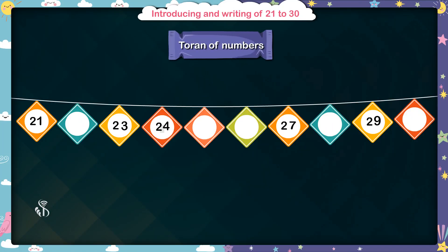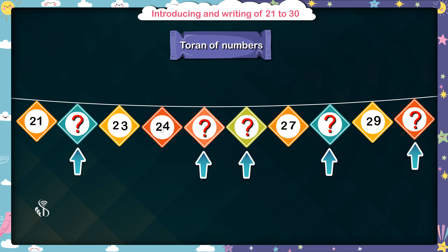Children, look here. This is a tooran of numbers. It is made up of 21 to 30 numbers. But some of the numbers are missing. You have to tell me the missing numbers. 22, 25, 26, 28, 30. Good.